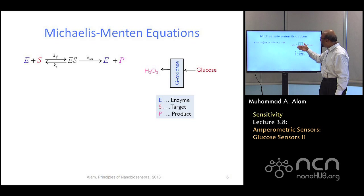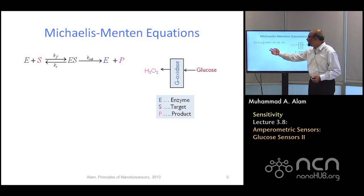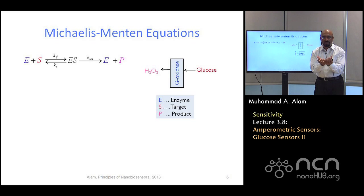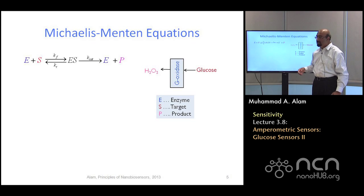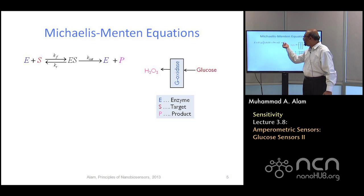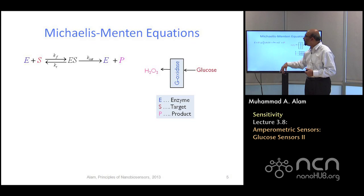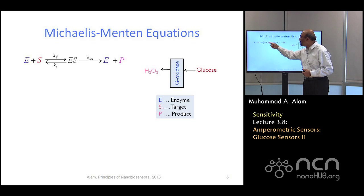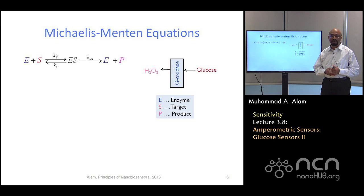If you wanted to describe this chemical process: the enzyme reacts with the target molecule to produce a temporary compound ES — this is the role of a catalyst. It holds things together in a particular shape so a certain reaction can proceed. After ES forms, it can go in one of two ways: it can produce the product (hydrogen peroxide), leaving the enzyme behind to participate in a second reaction; or it may go backward and fall apart, with the enzyme and target returning to their original state.